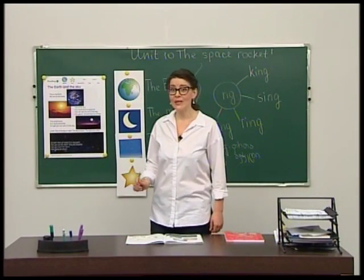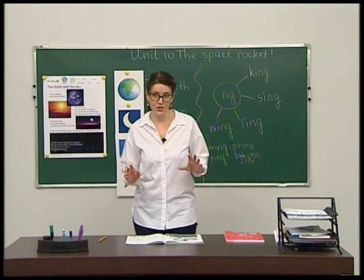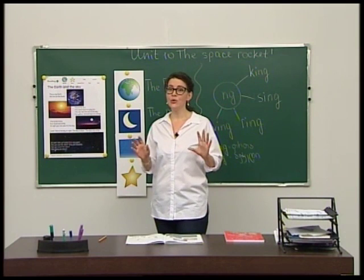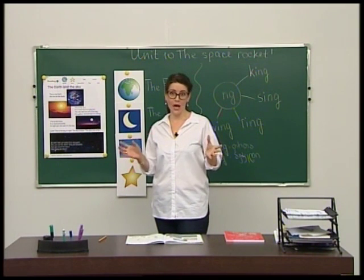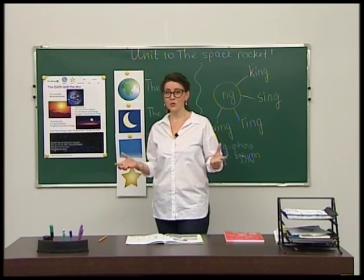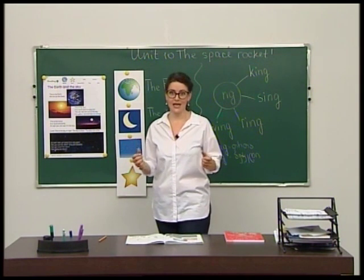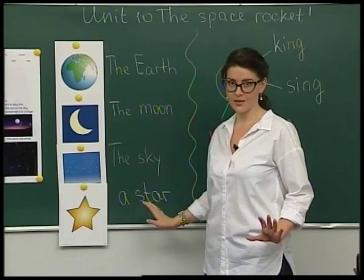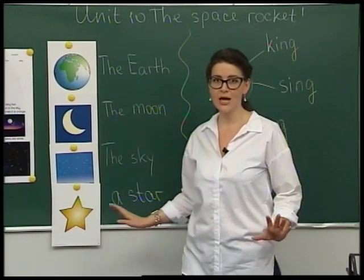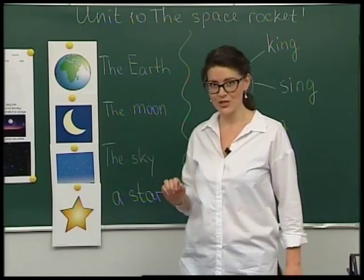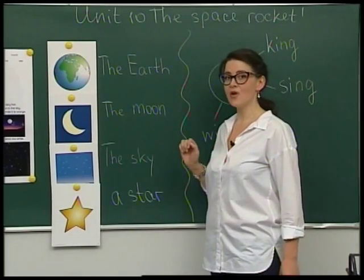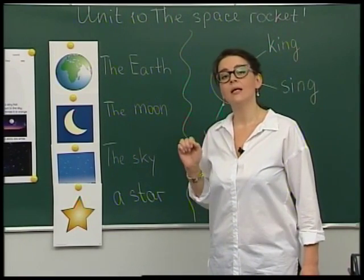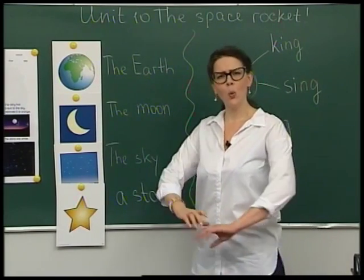And now let's play a game. I will ask you some questions and you have to guess what it is. You can choose from these words: the Earth, the Moon, the sky, or a star. The first question: it is round and it is white. What is it? Guess!